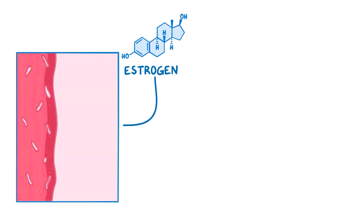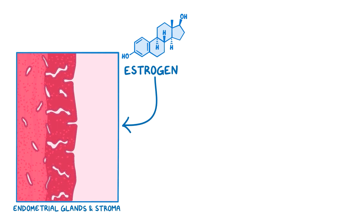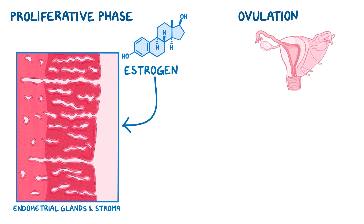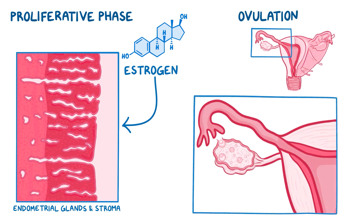Estrogen stimulates the growth of endometrial glands and stroma. This effect of estrogen predominates during the first phase of the menstrual cycle, also called the proliferative phase, because it's when the lining of the endometrium grows. At the end of this phase, ovulation occurs, where one ovarian follicle expels the oocyte into the fallopian tube and it travels to the uterus.